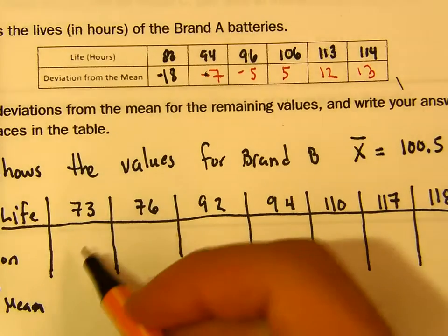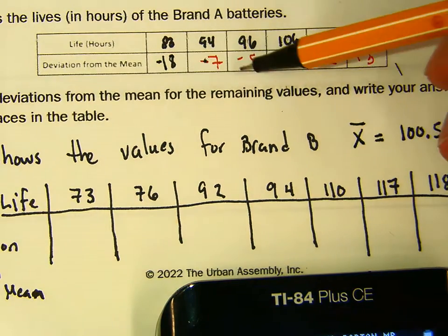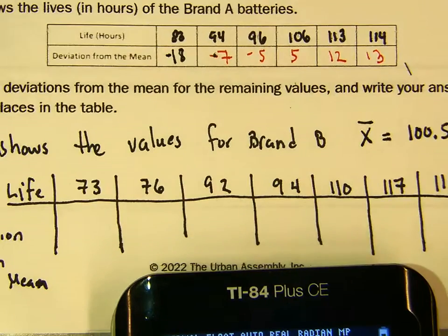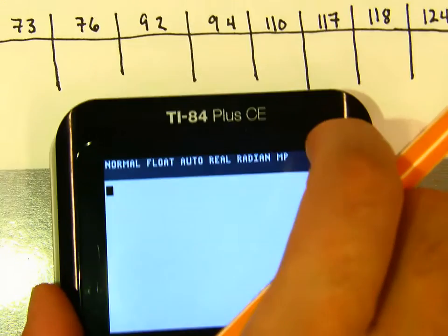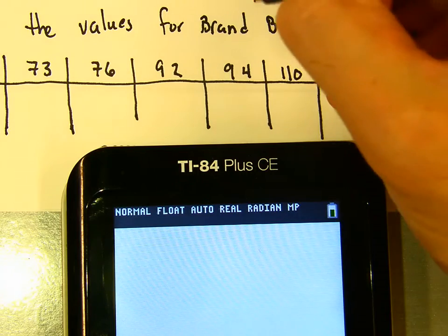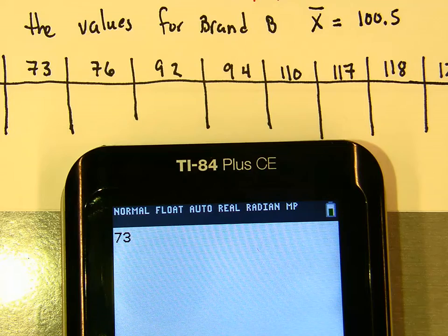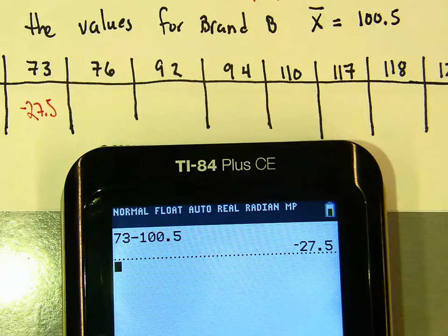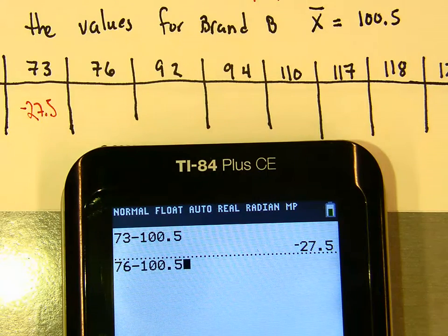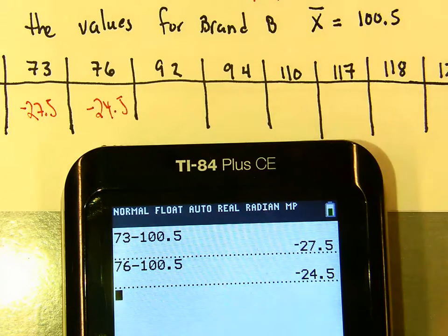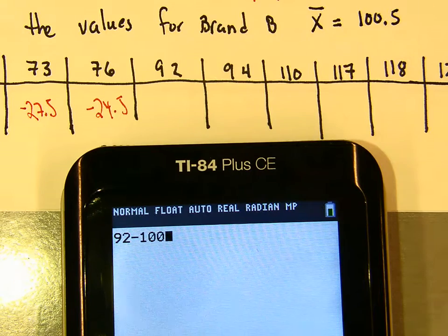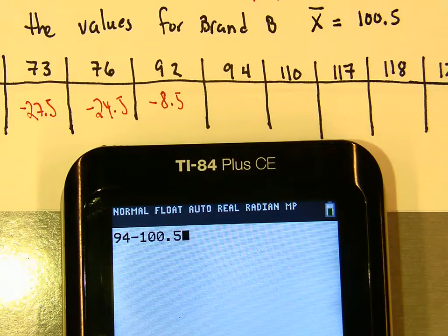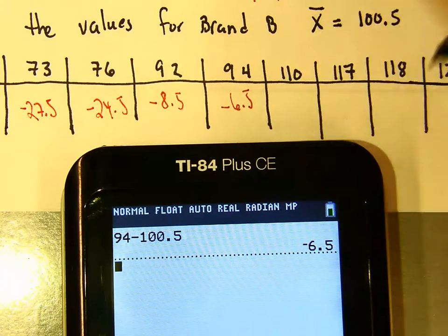Now for brand B's deviation from the mean, remember x̄ = 100.5. So: 73 − 100.5 = −27.5; 76 − 100.5 = −24.5; 92 − 100.5 = −8.5; 94 − 100.5 = −6.5, and so on. Because of time, let's jump to the next example.